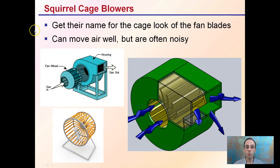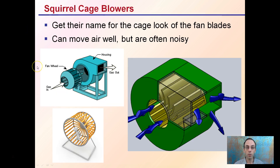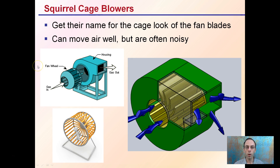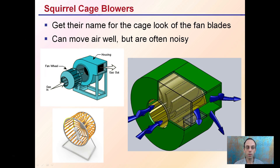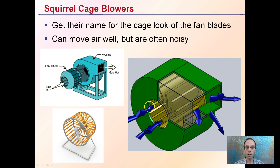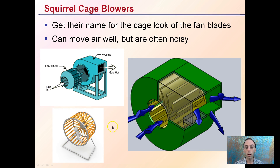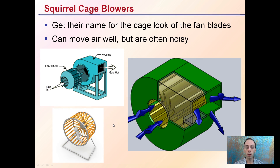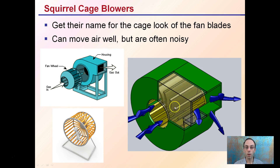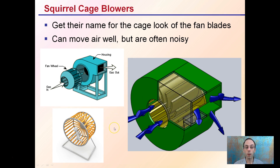Squirrel cage blowers get their name from the cage look of their fan blades — it kind of looks like a hamster wheel. They can move air well, but are often noisy. This is one option that might be a fit for your facility, but take the noise factor into consideration if that's a concern.